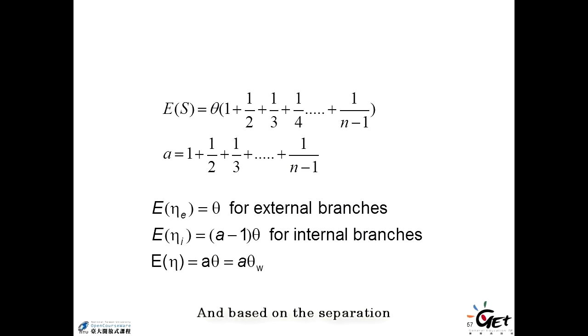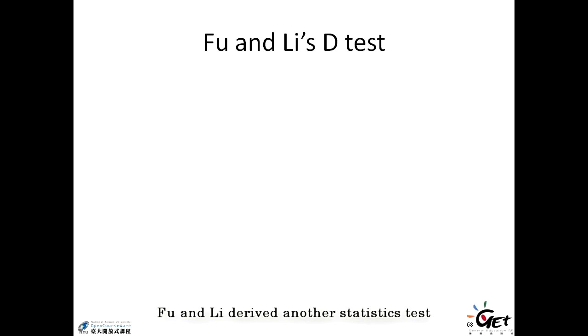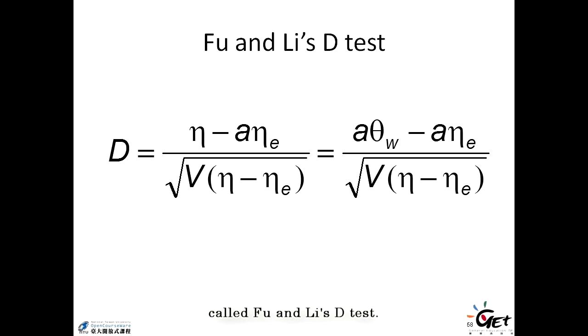And based on the separation of the external and the internal differences, Fu and Li derive another statistic test called Fu and Li's D test. And the D test is showing here. They compare the differences between the external and the internal branches. And actually we use the overall estimates compared with the external mutations.